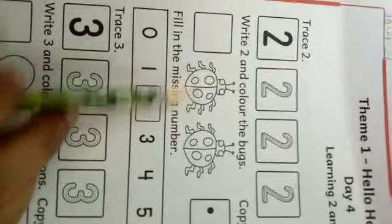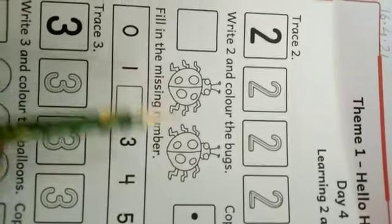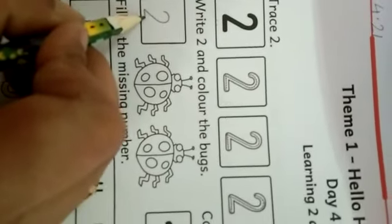Now come at this. How many bugs you can see here? 1 and 2. 1, 2. So what will we write here in this box? We will write 2. Formation should be correct.